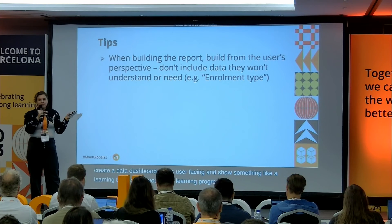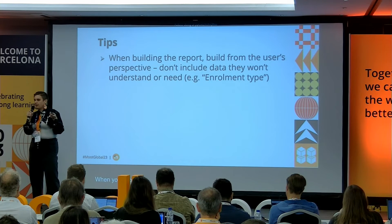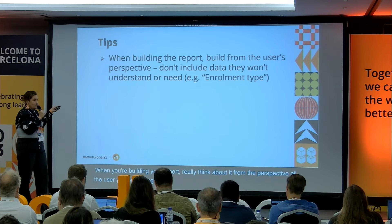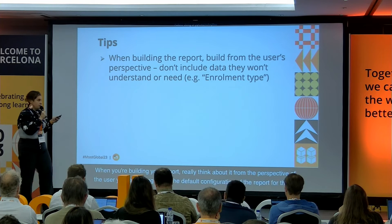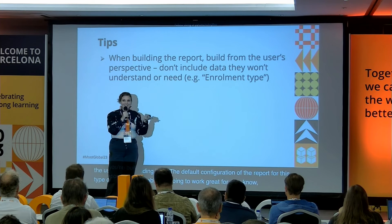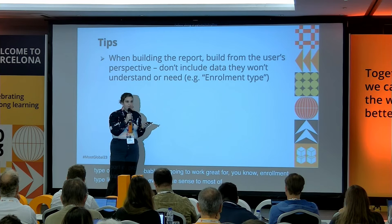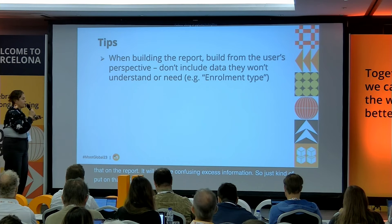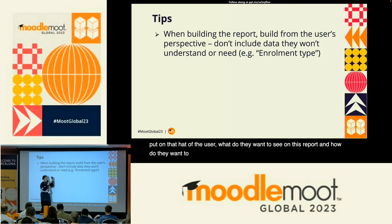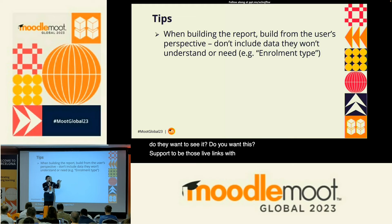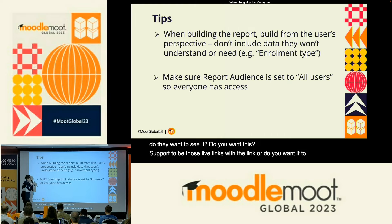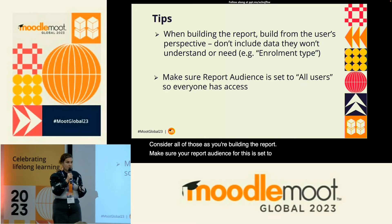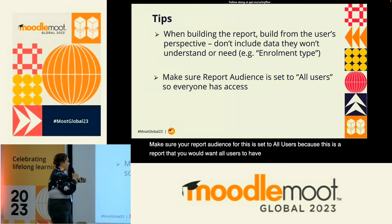Tips on this one: when building your report, think about it from the perspective of the user you're building it for. The default configuration of the report is probably not going to work great — for example, enrollment type doesn't even make sense to most users, so don't include that. Put on the hat of the user: what do they want to see, and do you want live links or static data? Make sure your report audience is set to all users, because this is a report you want all users to have access to so they see their own information.